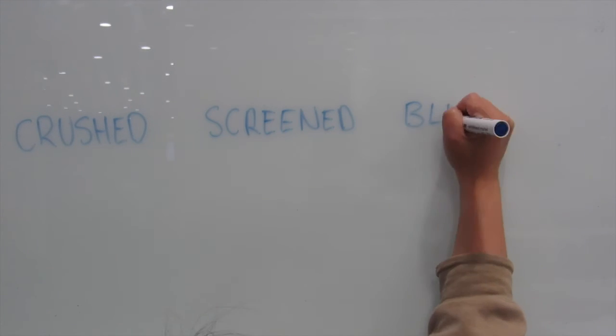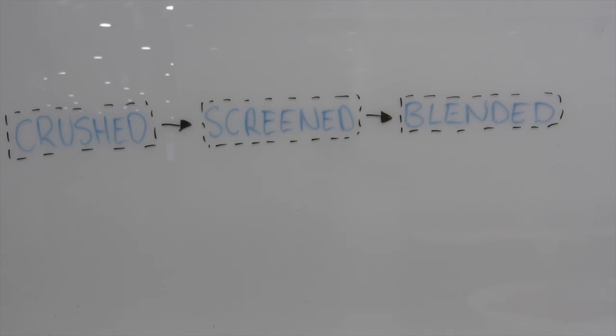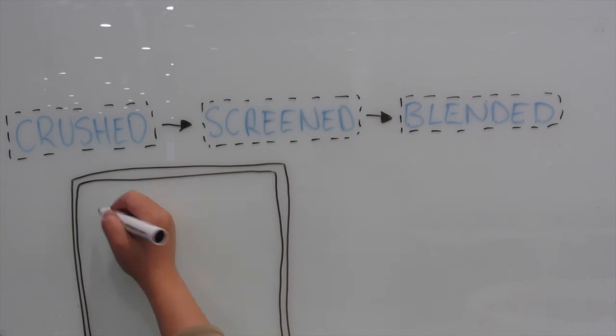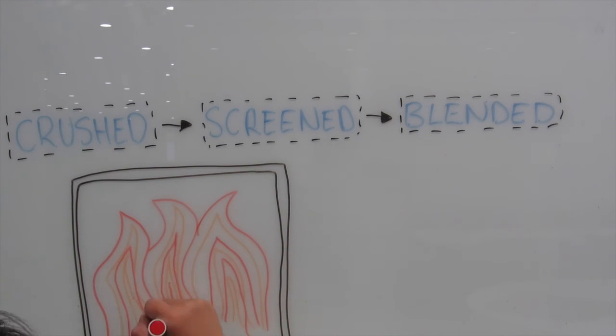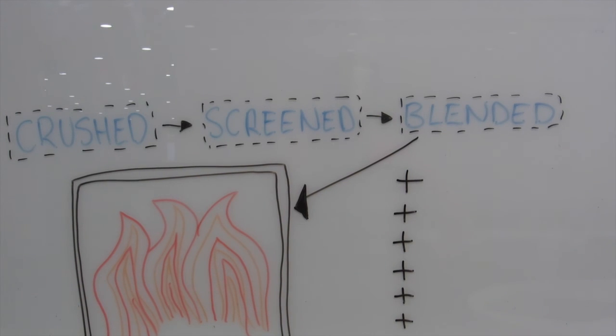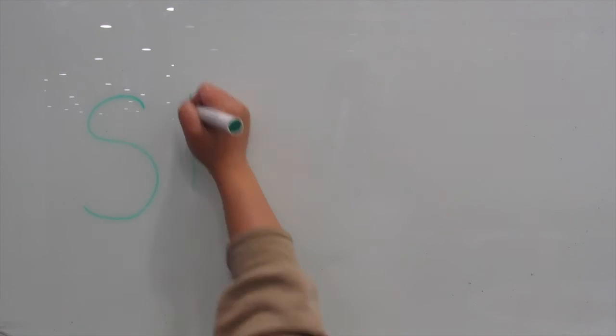The extraction of iron ore is generally performed through a blasting and removal process from a large open pit mine. It is then crushed, screened and blended for export or local consumption. Once blended, iron ore is smelted and alloyed with metals including nickel, chromium, manganese, vanadium, molybdenum and titanium. These go on to produce different types of steel.